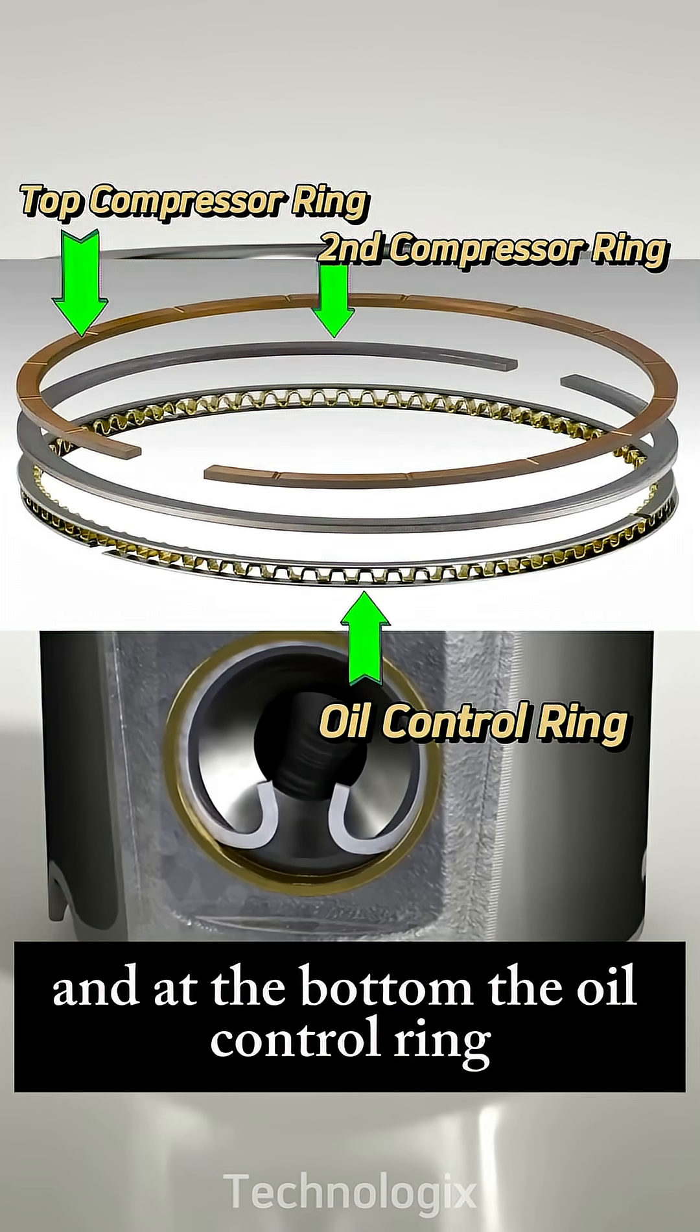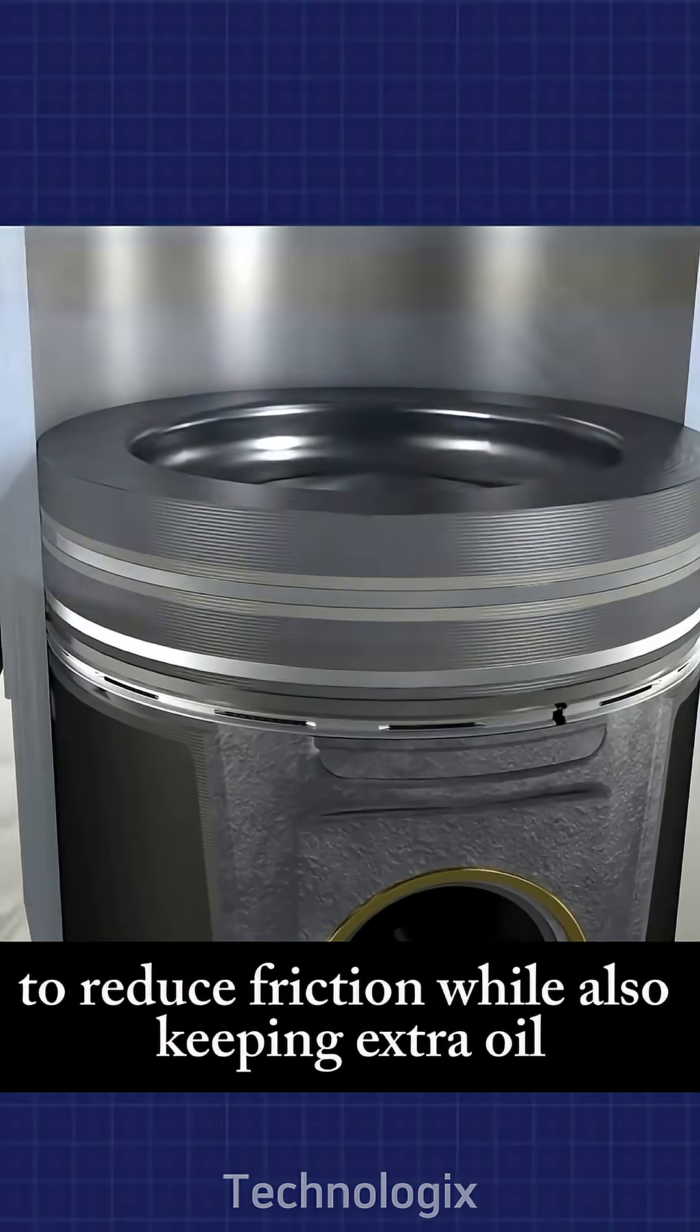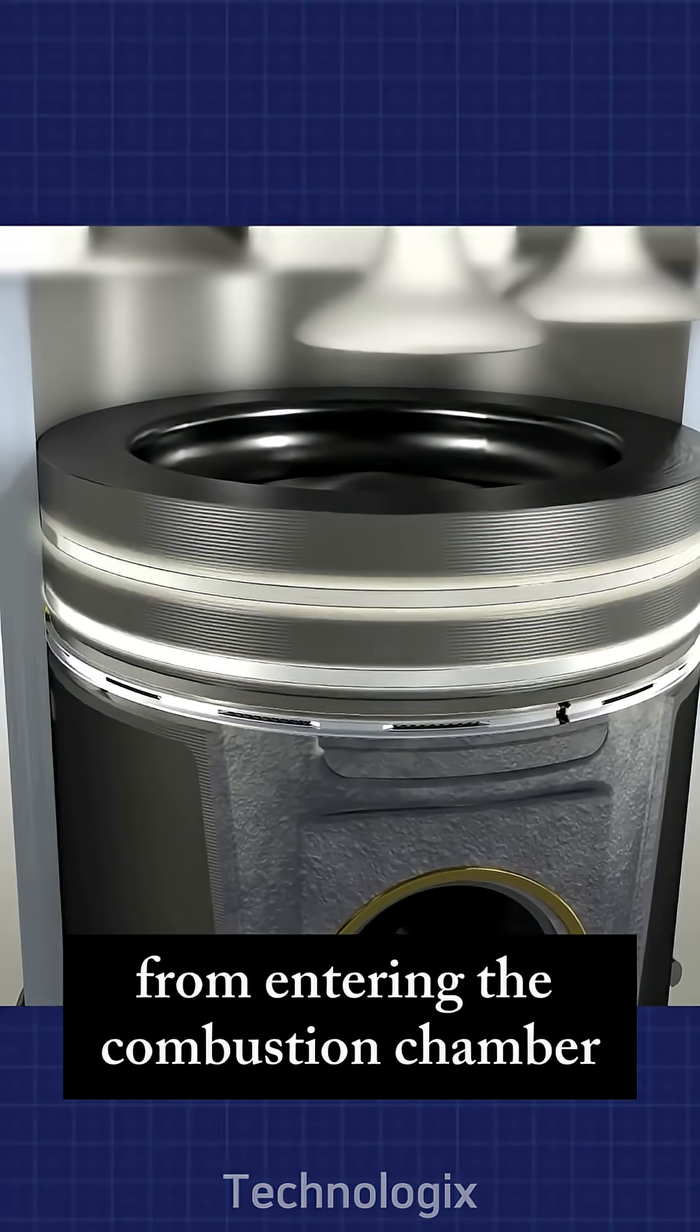And at the bottom, the oil control ring spreads oil evenly around the piston to reduce friction, while also keeping extra oil from entering the combustion chamber.